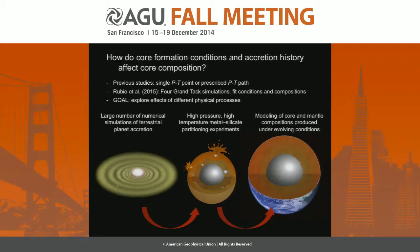Throughout this talk, I'm going to be mostly using the Earth as our example so that we can make comparisons to geophysical and geochemical data. Most previous studies that have looked at core formation in the Earth have either used a single pressure-temperature point or a prescribed pressure-temperature path. There was a recent advance in a study by Ruby et al. that used four n-body simulations to describe planetary growth, which were run using the GrandTAC model. They used these simulations to back out best-fitting core formation conditions and initial compositions in the solar system.